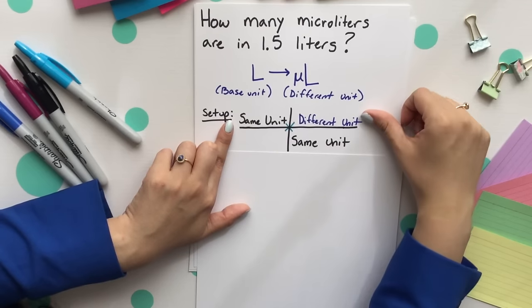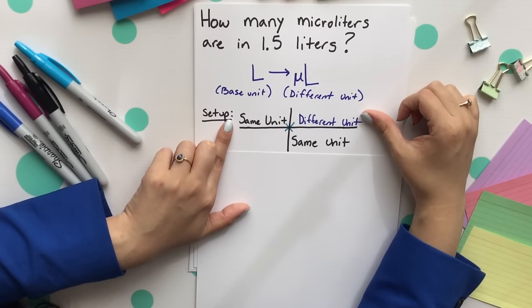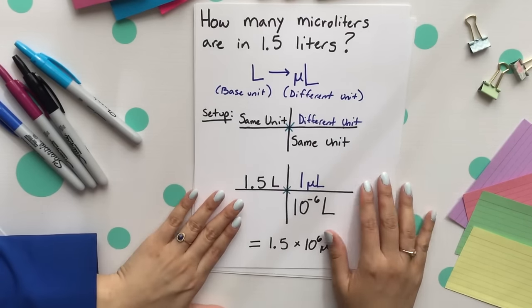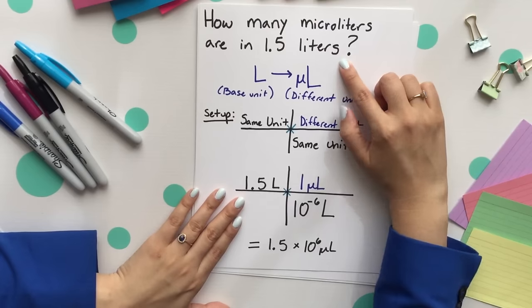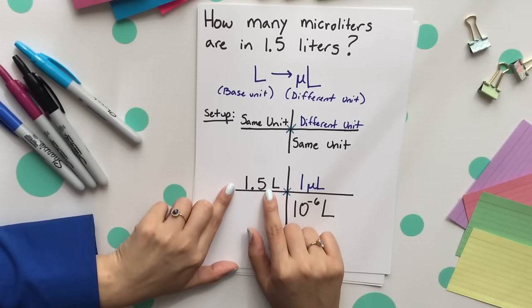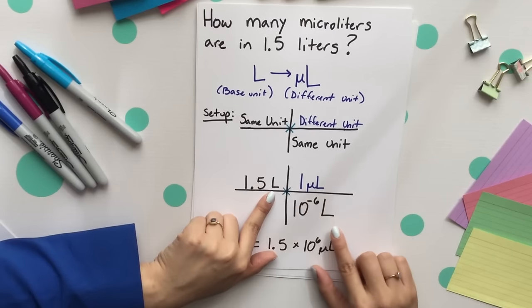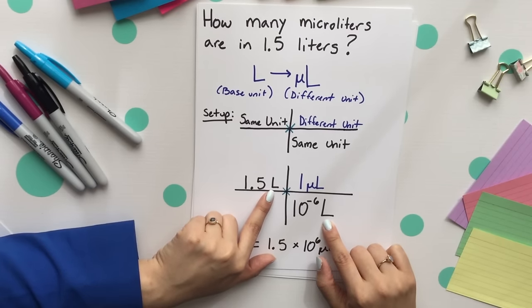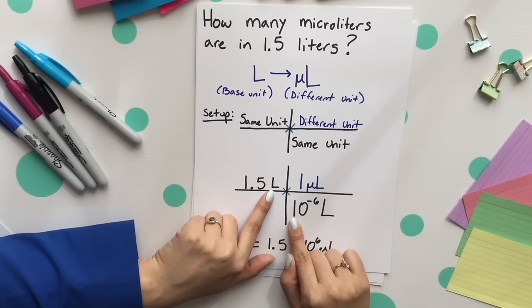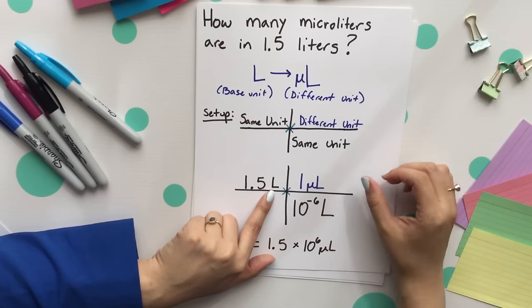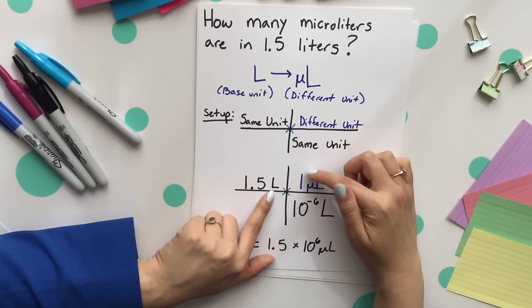Our proper setup for conversions is we want to put the same unit across from each other. The reason is because we will cancel out the unit. Next, you want to put your different unit or your desired unit on top because that is what you are looking for. In this case, our given is 1.5 liters so we want to start with that. Next, our same unit then goes across from each other so our liters with our liters. These then would cancel and like I mentioned before, our base unit is liters so we'll place that 10 to the some sort of power. In this case, it's negative 6 and our different unit is microliters placing the one there.